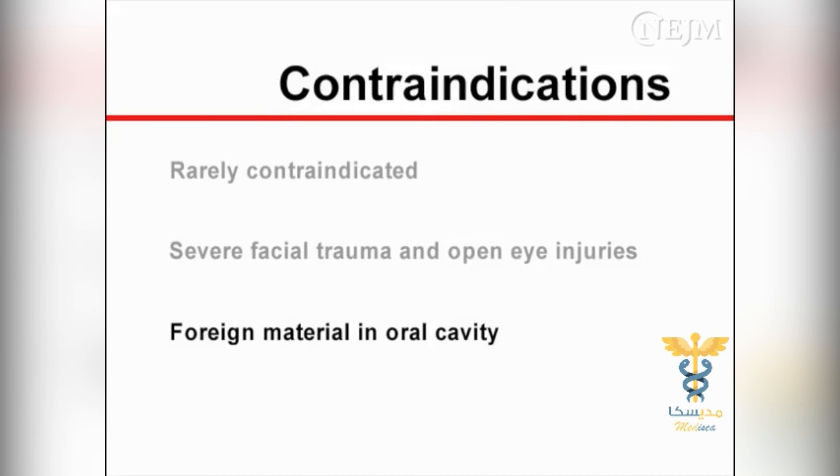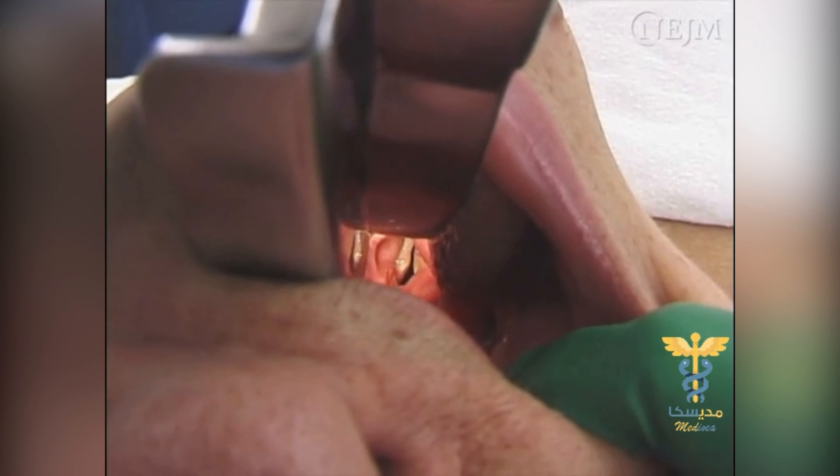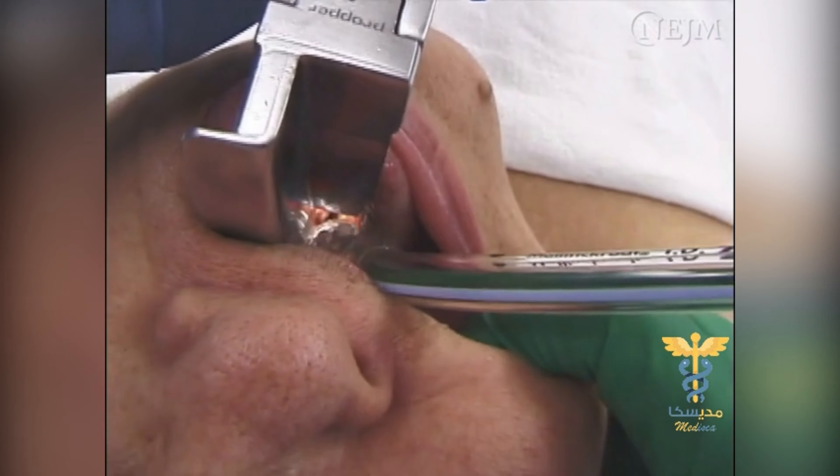Providing positive pressure ventilation with a face mask and a bag valve device can be a life-saving maneuver. Although seemingly simple, the technique requires an understanding of the airway anatomy, the equipment, and the indications. Developing manual skills is necessary to provide adequate face mask ventilation. While endotracheal intubation is frequently the definitive airway management approach for patients in respiratory failure, it is not always feasible. In these circumstances, ventilating a patient with a face mask can be an invaluable temporizing measure. The purpose of this video is to demonstrate the equipment and technique used to provide positive pressure ventilation with a face mask and a bag valve device.